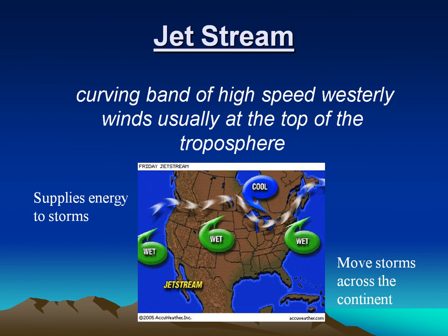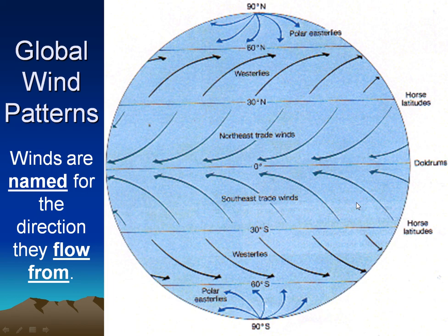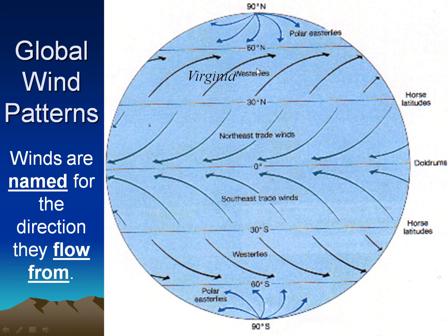The jet stream is an example of a very high atmospheric wind. It's a high westerly wind, usually at the very top of the weather-producing part of our atmosphere. It supplies energy to storms and is also what moves our storms more quickly across the continent. Global wind patterns — these are called westerlies because the wind is coming roughly from the west. Virginia, and in fact all of North America, is in the westerly wind belt, which is why our storms blow from west to east across the United States. Winds are always named for where they come from. The trade winds move the other direction.